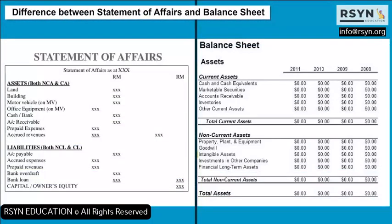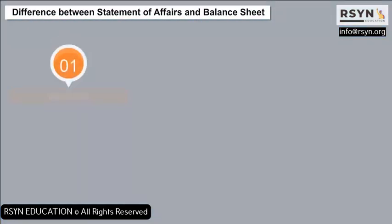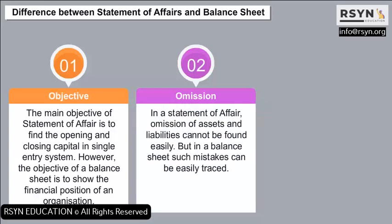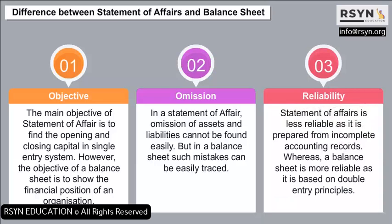Key differences between statement of affairs and balance sheet: 1. Objective — the main objective of a statement of affairs is to find the opening and closing capital in single entry system, whereas the objective of a balance sheet is to show the financial position of an organization. 2. Omission — in a statement of affairs, omission of assets and liabilities cannot be found easily, but in a balance sheet such mistakes can be easily traced. 3. Reliability — a statement of affairs is less reliable as it is prepared from incomplete accounting records, whereas a balance sheet is more reliable as it is based on double entry principles.